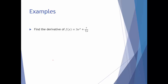Let's take a look at this example: find the derivative of f of x equals 3e to the x plus 7 divided by the cube root of x. Before taking the derivative, I'm going to rewrite the second term in a slightly more familiar form so I can apply the appropriate rule. We have 3e to the x plus 7x to the negative one-third.